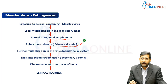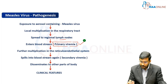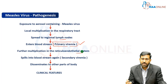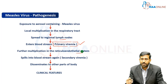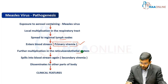Following primary viremia, the virus from the blood reaches the various lymphatic and reticuloendothelial system, like the spleen. There, there is going to be a secondary multiplication. After the secondary multiplication, the virus from the reticuloendothelial organs and system spills back into the blood — that is called the secondary viremia.